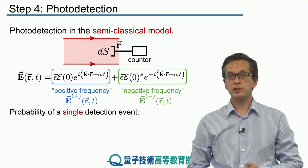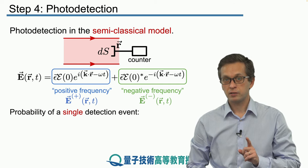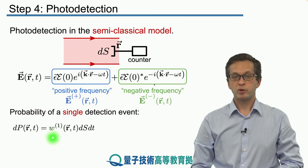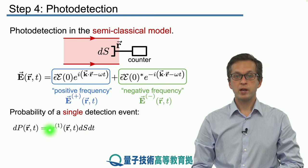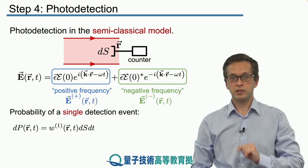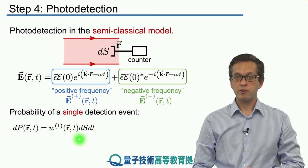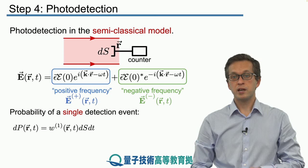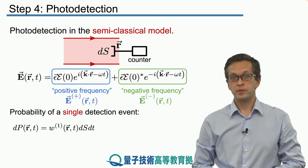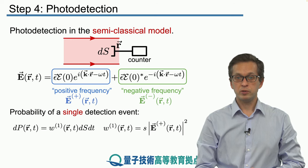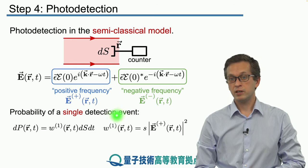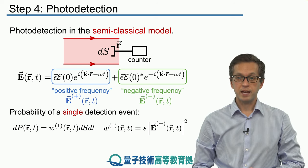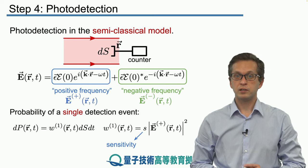Now, we ask the question, how do we compute the probability of a single detection event, meaning our detector detects a single photon? We denote this probability by dP, and it's proportional to the rate of photo detection, w^(1). This 1 signifies that we are looking for a single detection event, times the area of the detector given by dS, times the time interval dt, which is our time of integration. In other words, in this time, our detector is switched on and ready to register a click. So all we really want to compute is this photo detection rate of a single detection event given by w^(1), and is equal to s times the modulus squared of the positive frequency part of our electric field. And this s is known as sensitivity.